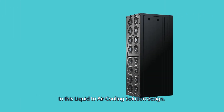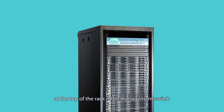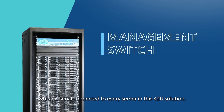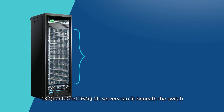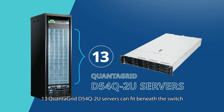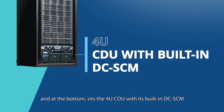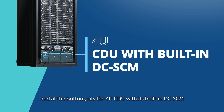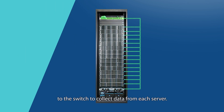In this liquid-to-air cooling solution, at the top of the rack is the management switch, which is serially connected to every server. In this 42U solution, 13 QuantiGrid D54Q-2U servers can fit beneath the switch, followed by a 1U redundant power sled. At the bottom sits the 4U CDU with its built-in DCSCM for smart rack management, which connects to the switch to collect data from each server.